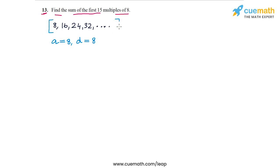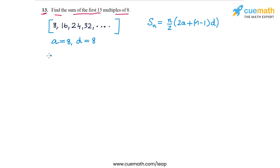There are two ways we could do this. The first is to directly apply the sum formula: the sum of the first n terms of an arithmetic progression is Sn = n/2 × (2a + (n−1)d). To find S15, this will be equal to 15/2 × (2×8 + (15−1)×8), so that's 15/2 × (16 + 14×8).